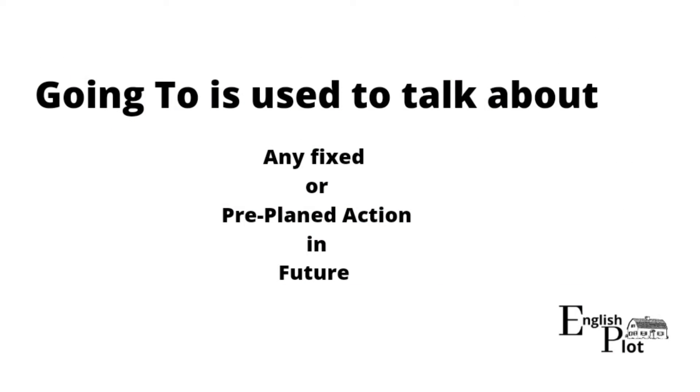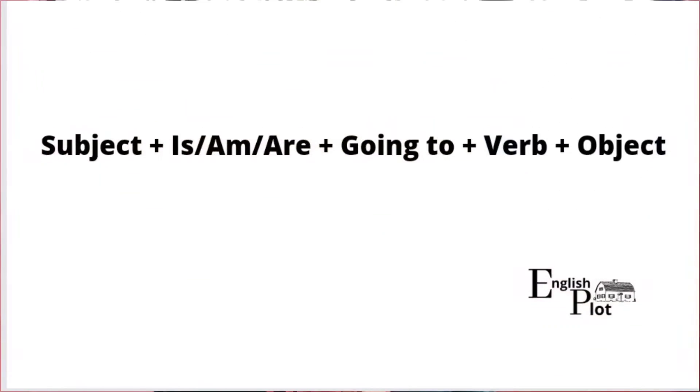Before we start talking about 'going to,' let's learn its real meaning. 'Going to' is used to talk about any fixed or pre-planned action in the future that you have already decided on. The structure is: Subject + is/am/are + going to + verb + object.